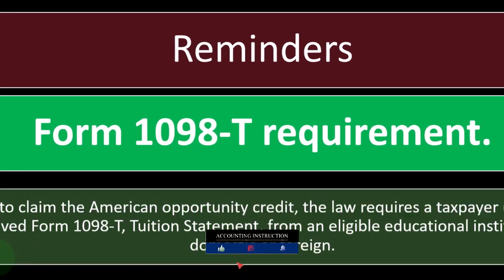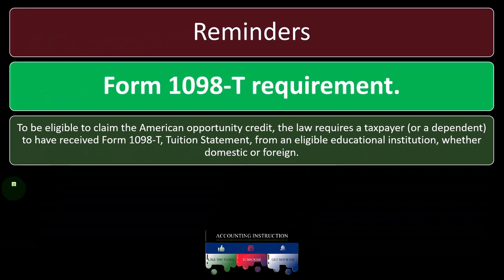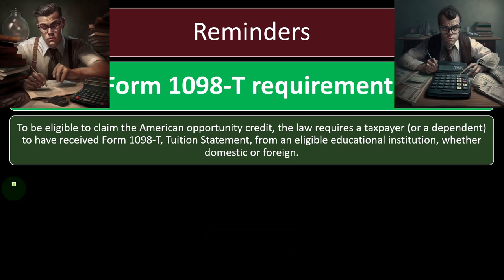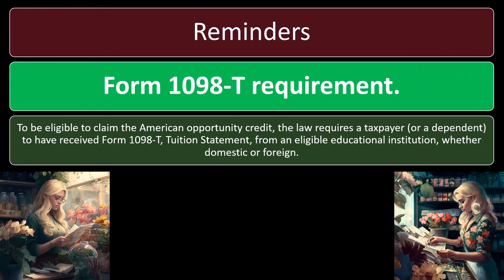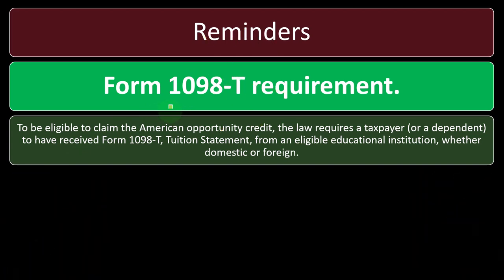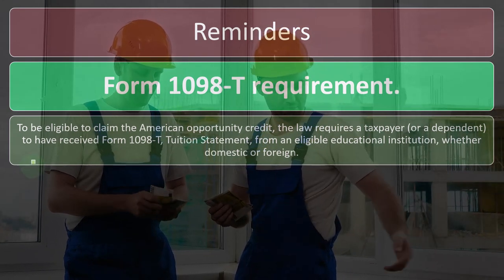Reminders — Form 1098-T requirement. To be eligible to claim the American Opportunity Credit, the law requires a taxpayer or a dependent to have received Form 1098-T, the tuition statement, from an eligible educational institution, whether domestic or foreign. My interpretation of this 1098-T is not that you need the exact numbers to tie out to it, although that might often be the case. The government is also receiving that Form 1098-T, and if you're taking a credit related to expenses for higher education, they want to confirm you were enrolled in an institution of higher education.